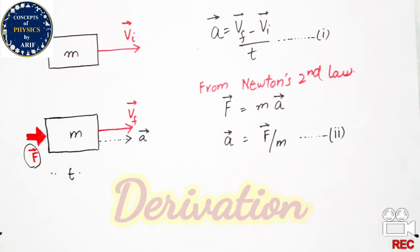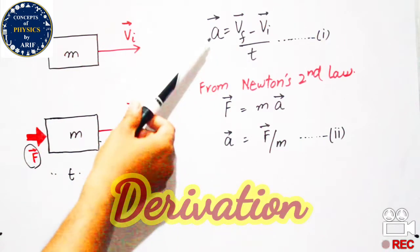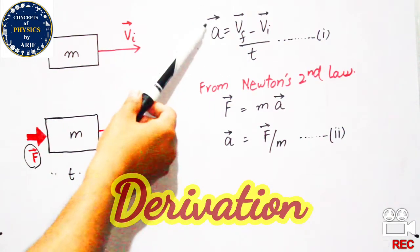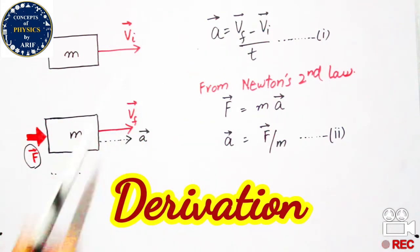From the relation of acceleration, you can see that a = (vf - vi) / t. You can see the arrow on acceleration and velocity because acceleration and velocity are vector quantities.